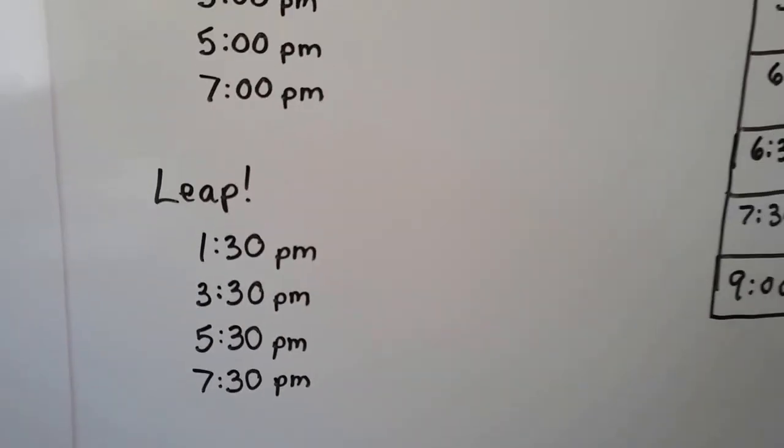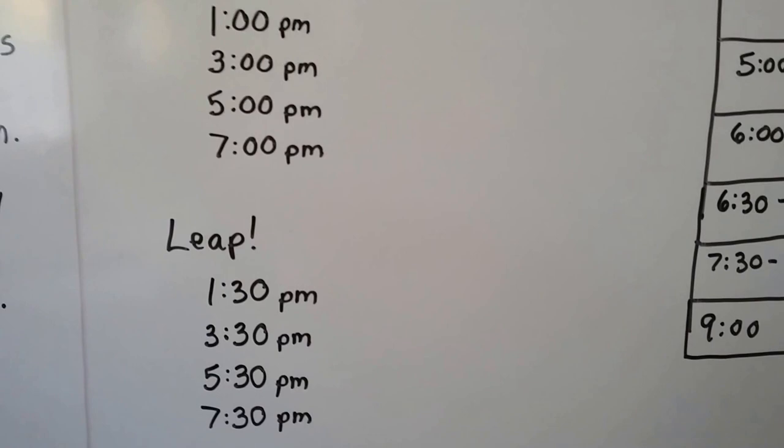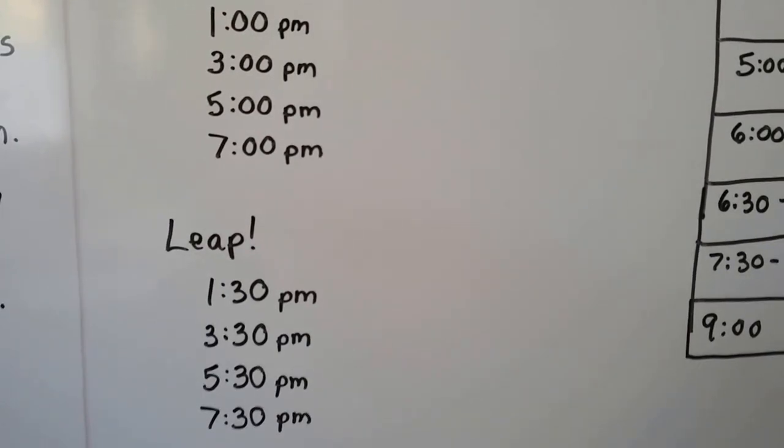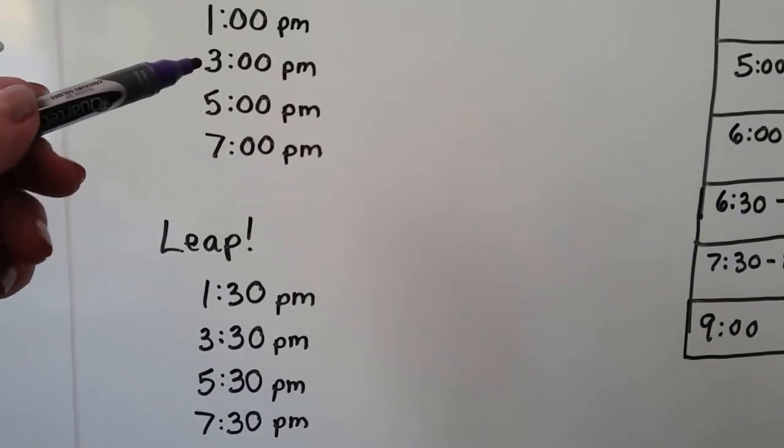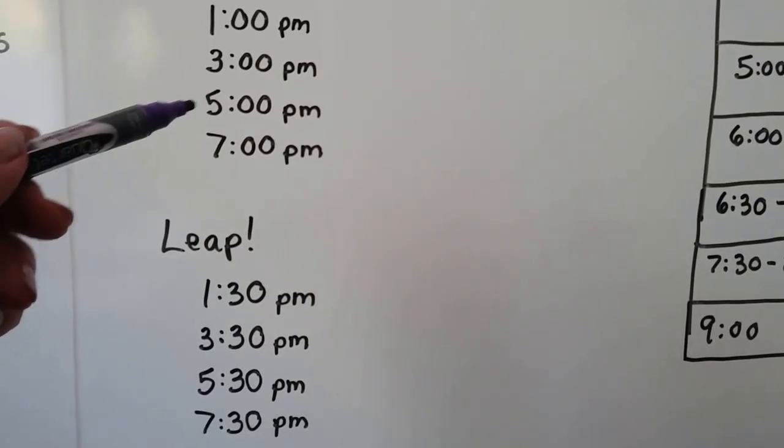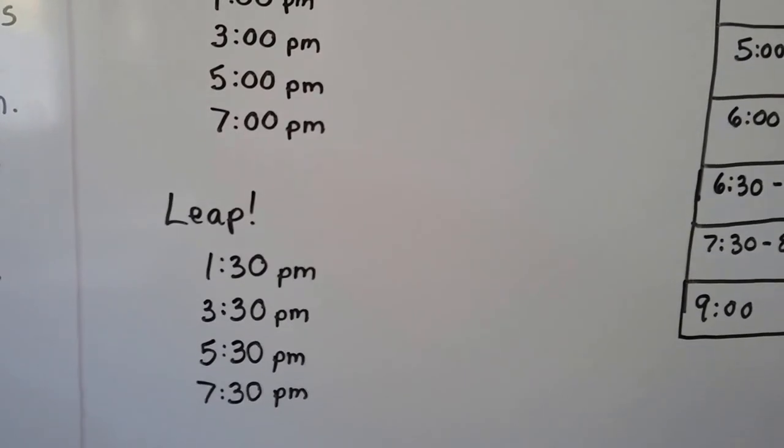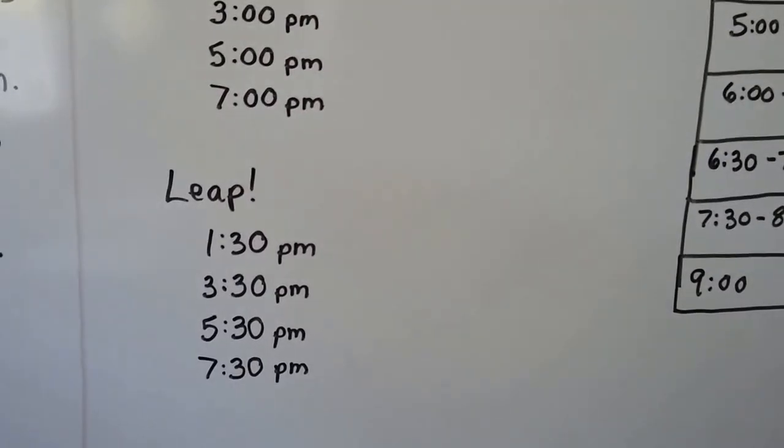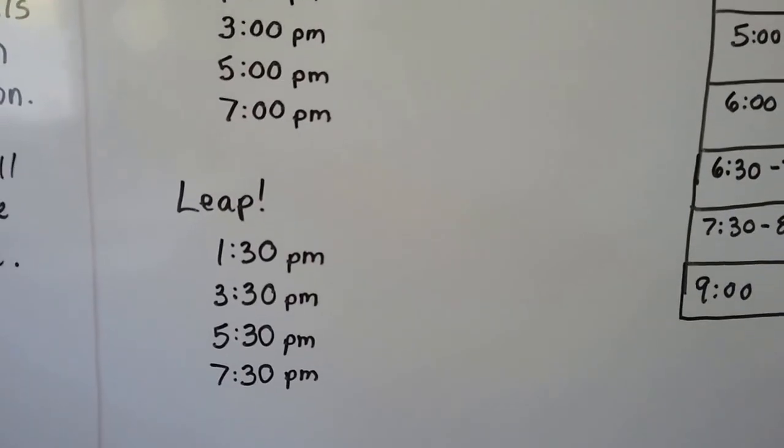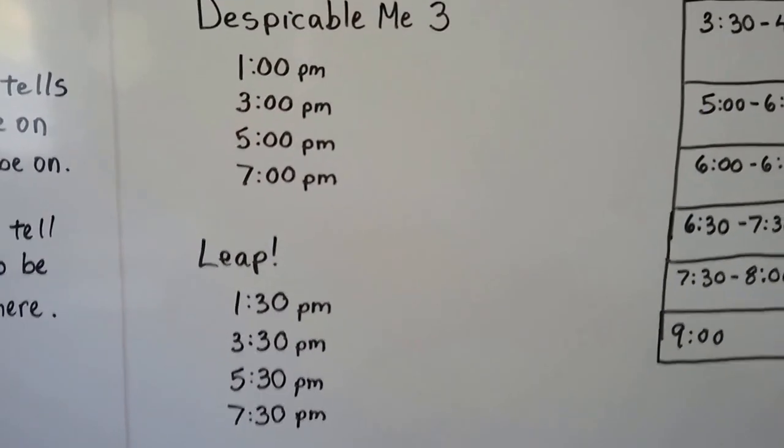And we can see their movies are every two hours, aren't they? From 1 o'clock to 3 o'clock, we'd say 1, 2, 3, it's two hours. From 3 to 5 is two hours, and from 5 to 7 is two hours. And even though these have a 30 for the minutes, they're every two hours. So we know what time to be at the movie theater to catch the movie.